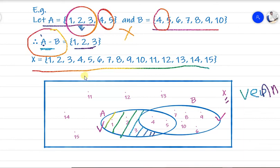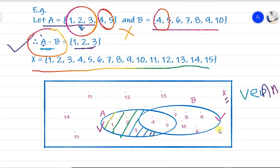If you are taking B minus A, then you shade the portion of B that does not overlap with A. That shaded portion represents B minus A. This is all about the difference of two sets. In the next video, we will discuss the next operation: symmetric difference.